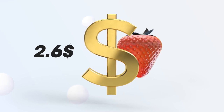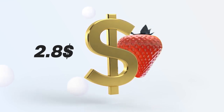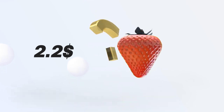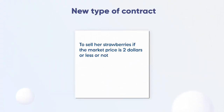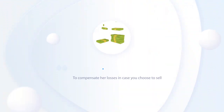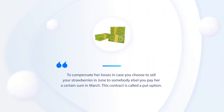Options. For two years in a row, strawberry market prices were higher than $2.00, so you feel a bit disappointed. You don't want to make futures and forward contracts anymore. However, you'd like to continue to work with your friend. So you propose a new type of contract where you leave yourself an option to sell her strawberries if the market price is $2 or less, or not to sell in case the price goes up. To compensate her losses in case you choose to sell strawberries in June to somebody else, you pay her a certain sum in March.